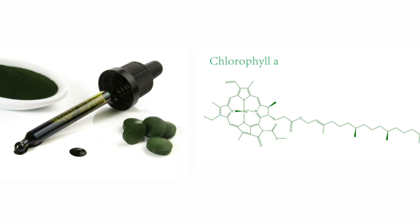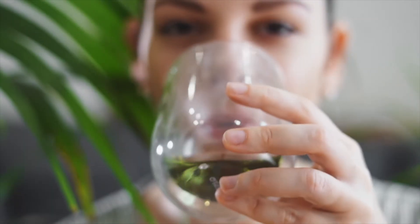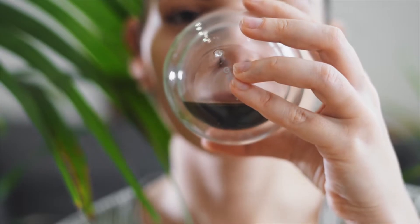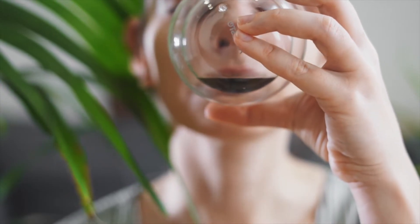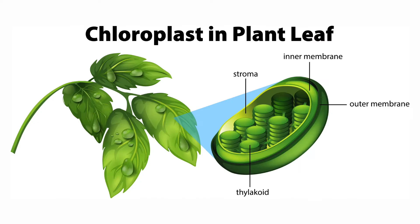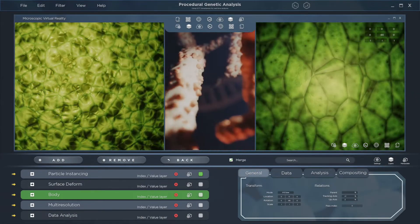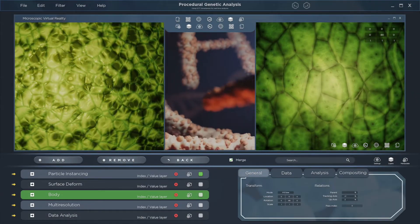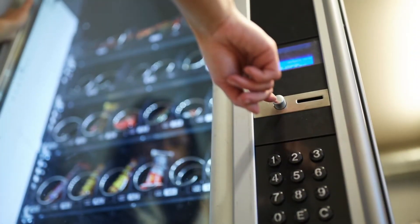Did you know that it's actually possible to buy chlorophyll as a supplement? Many people suggest it has health benefits. Is being able to make your own food from sunlight one of them? Is that the solution to always being hangry? Unfortunately, no. While chlorophyll is necessary for photosynthesis, there are other parts of the chloroplast organelle that are required as well. And, at least as of yet, scientists have not found a way to implant chloroplasts into animal cells. So you'll have to settle for stopping by the snack machine.